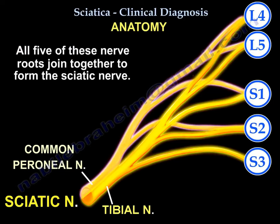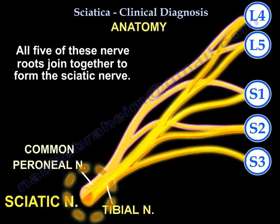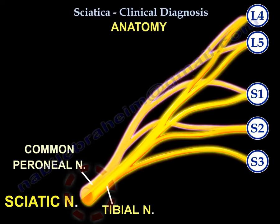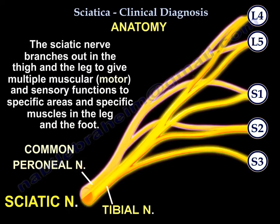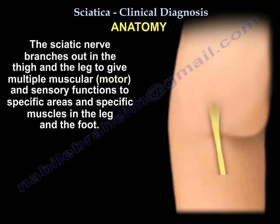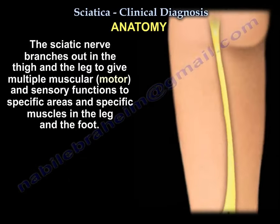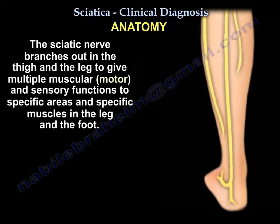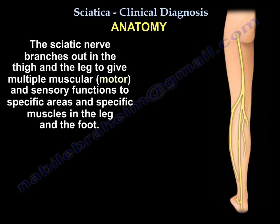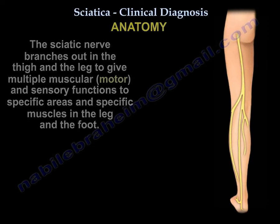All five nerve roots bundle together to form the sciatic nerve. It then branches out again in the thigh and leg to provide motor and sensory functions to specific areas and muscles in the leg and foot.